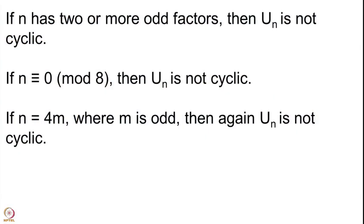Now the remaining cases involve 4 dividing n with at most one more odd factor. If there are 2 or more odd factors we refer to the first statement. The last non-cyclic case: if n = 4m where m is odd and m > 1, then U(n) is not cyclic. This is because there is a square root of 1 modulo 4, namely 3, and m being odd gives at least one more square root, so together with 1 we have more than 2 square roots of 1.